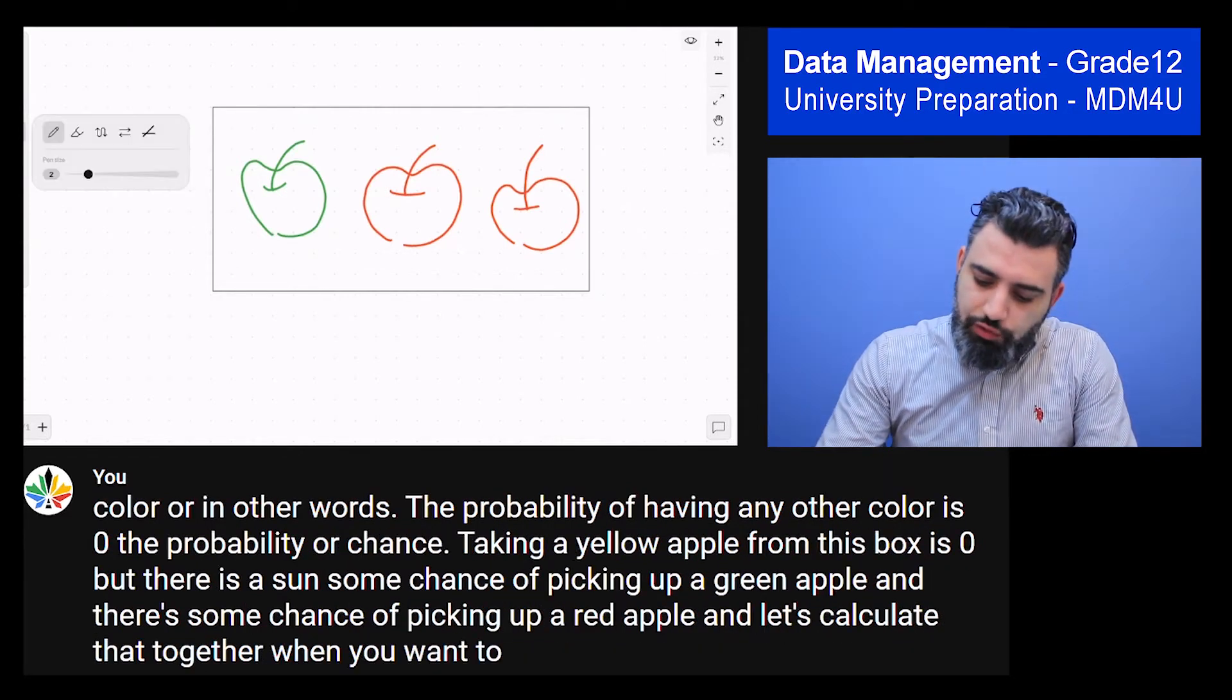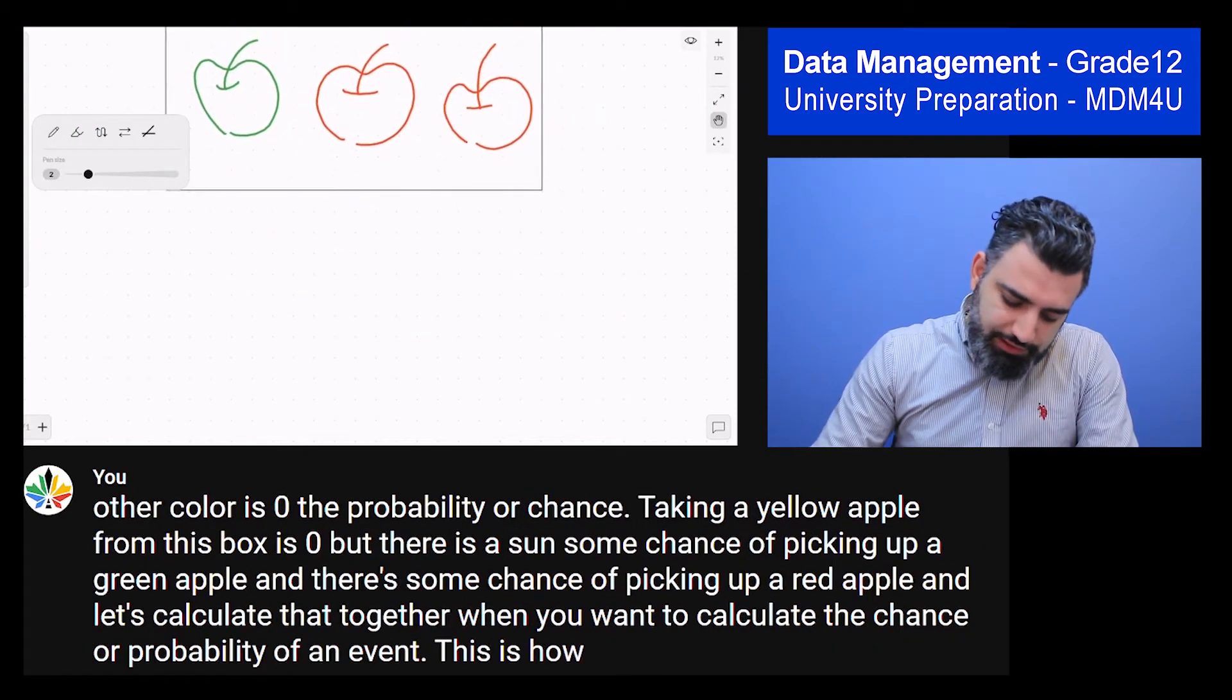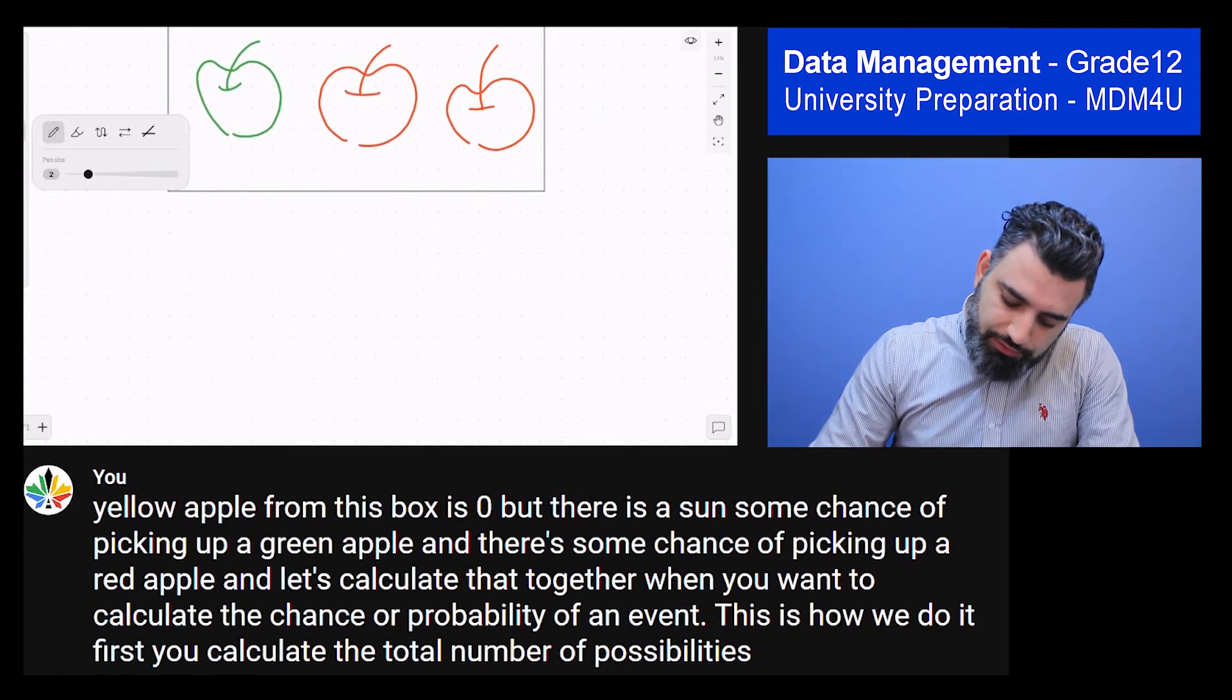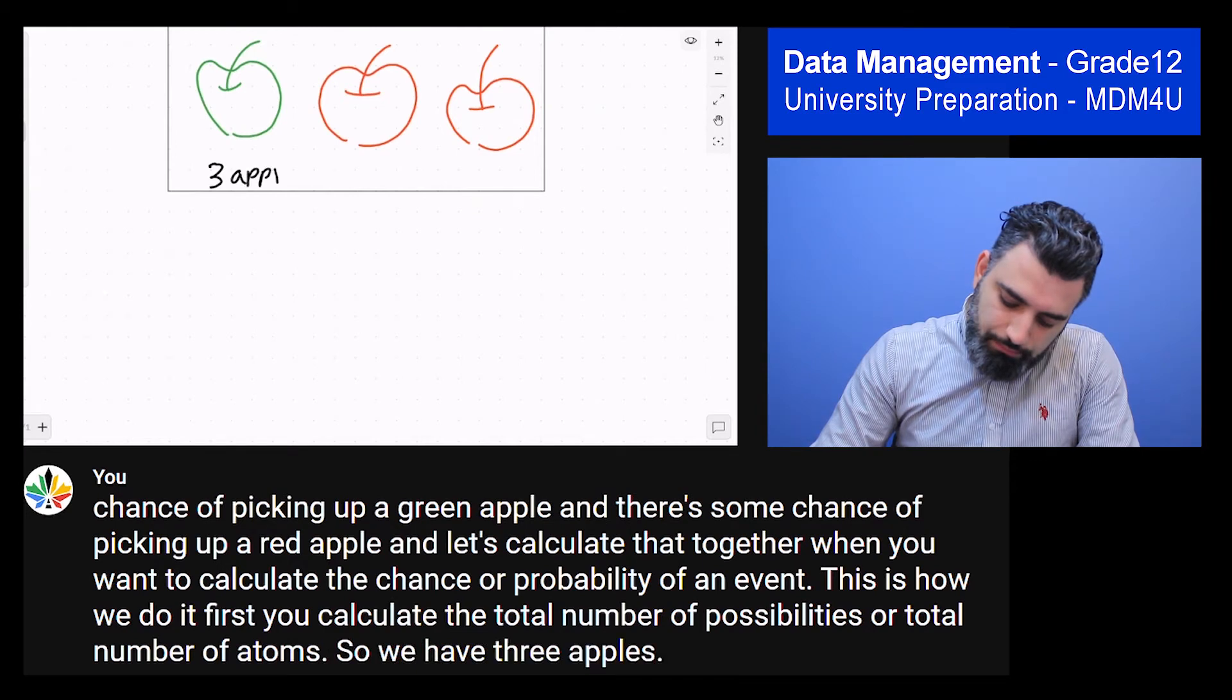When you want to calculate the chance or probability of an event, this is how we do it. First, you calculate the total number of possibilities or total number of apples. So we have three apples in total.